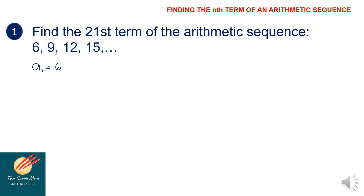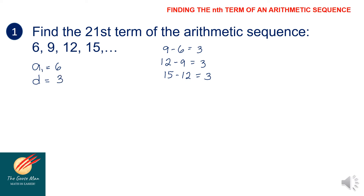Next, let's find the common difference. The difference between 9 and 6 is 3. Then 12 minus 9 is also 3, and 15 minus 12 is also 3. So therefore, the common difference is equal to 3.